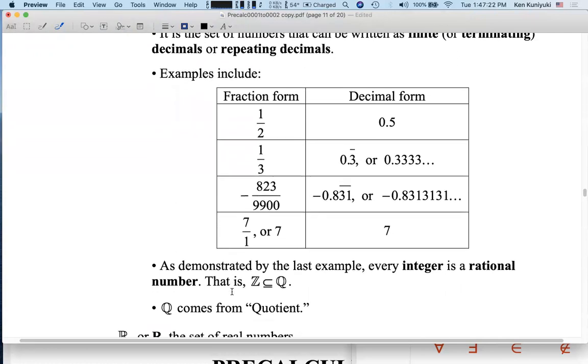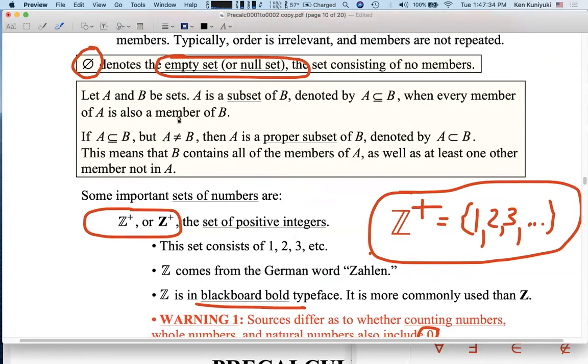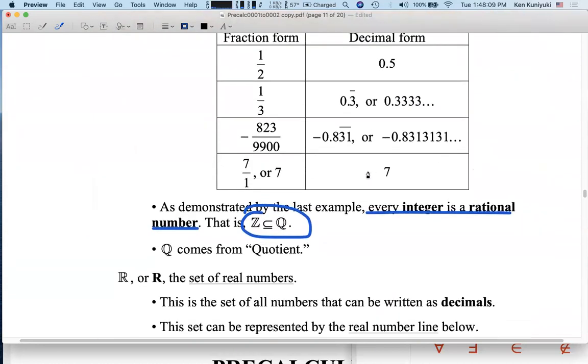And by the way, one comment about that. Because every integer is a rational number, we can say that Z is a subset of Q. So that goes back to what I had up here, right? Let A and B be sets. A is a subset of B, and that's denoted by this over here, when every member of A is also a member of B. So, for example, if this oval represents A in our Venn diagram, and this oval represents B in our Venn diagram, then A is a subset of B. Every element of A is also an element of B. Every integer is a rational number, because every integer can be written as itself over 1. Z is a subset of Q. Every integer is also a rational number.